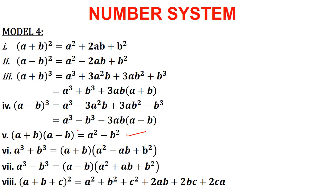The next one is: a³ + b³ = (a + b)(a² - ab + b²). The next one is: a³ - b³ = (a - b)(a² + ab + b²). The last one is: (a + b + c)² = a² + b² + c² + 2ab + 2bc + 2ca. This completes the formula list which we have discussed.